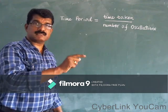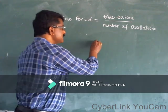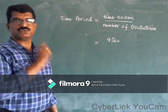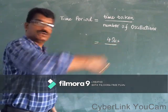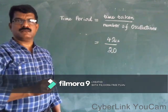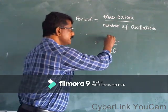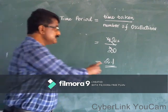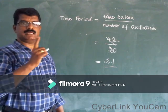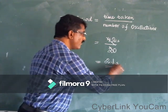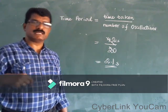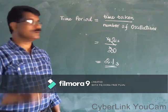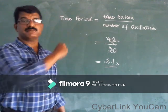Stop the stopwatch once the counting is over. For example, if time taken is 42 seconds and in 42 seconds, 20 oscillations took place, then divide 42 by 20 — you get 2.1. That means the time period is 2.1 seconds, which is the time taken to complete one oscillation. Time period equals time taken divided by number of oscillations.